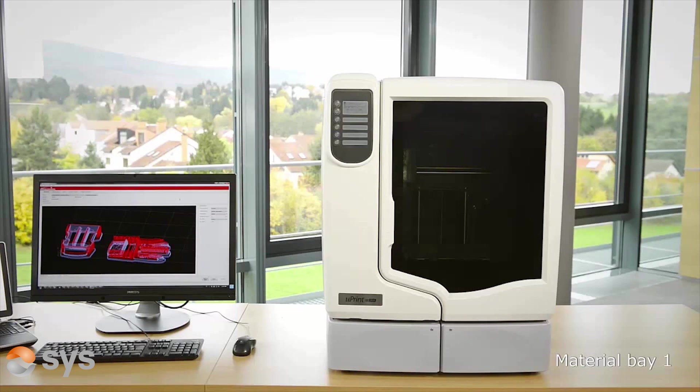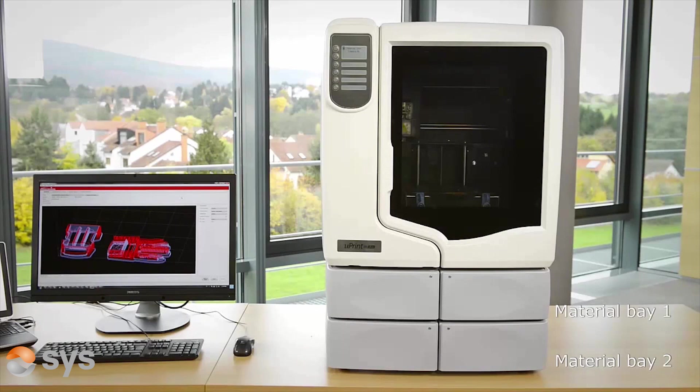The Uprint comes standard with one tray made up of two loading bays, one for the model material and the second for the soluble support material. There is an option for a second tray which effectively doubles that capacity and the second tray will auto switch ensuring no interruption in the printing process.